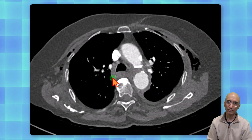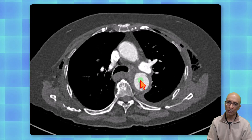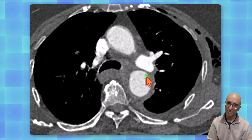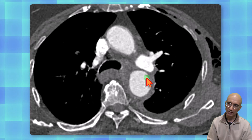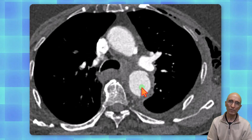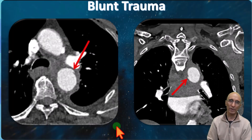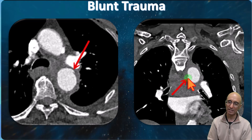The scan was reviewed a few hours later, at which point the radiologist noticed tiny intimal flaps in the descending thoracic aorta — another tiny intimal flap without obvious external contour abnormality. So our patient who has sustained blunt trauma has tiny intimal flaps in the descending thoracic aorta.